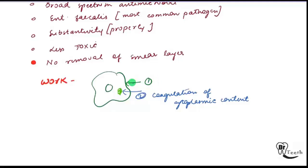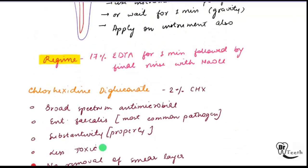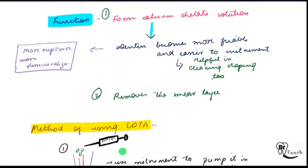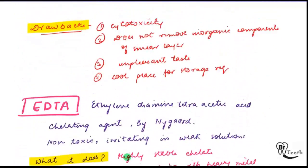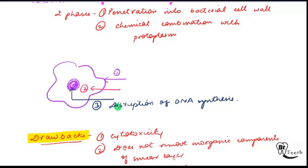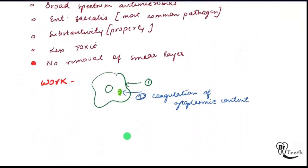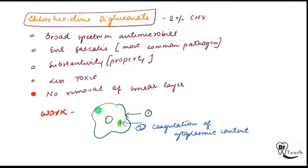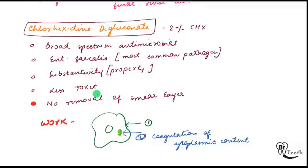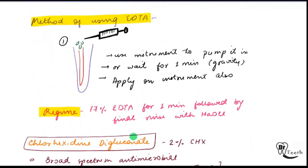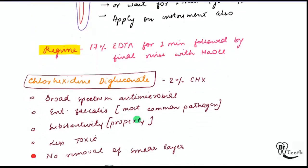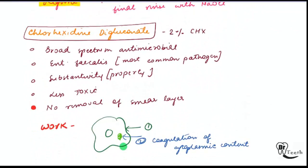Chlorhexidine penetrates the cell membrane and causes coagulation of the cytoplasmic content. To summarize: sodium hypochlorite is a reducing agent that disrupts DNA synthesis; EDTA is a chelating agent; and chlorhexidine digluconate is an antimicrobial agent that coagulates cytoplasm.